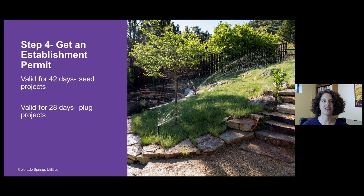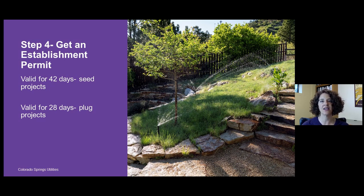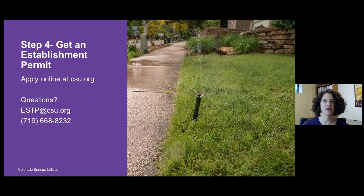If you're doing a seeding project, your establishment permit will be valid for 42 days. If you're planting plugs, it will be valid for 28 days. Both durations should be sufficient to get the seed germinated or plugs established, after which you move back to three days per week of watering. You can apply for an establishment permit online at csu.org.